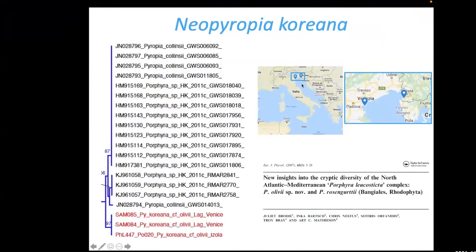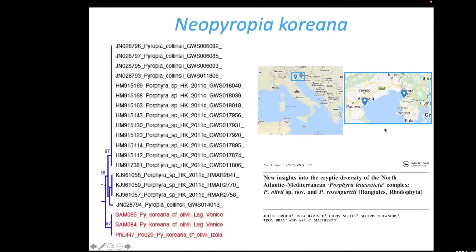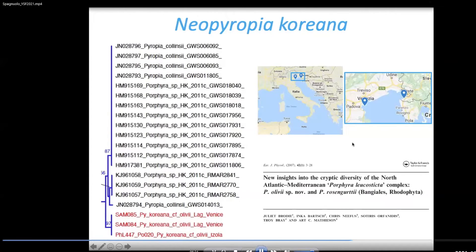Neoporphyra koreana had never previously been sequenced along the Italian coast or in the Mediterranean. The only existing Mediterranean sequence of N. koreana comes from an article by Brodie et al., which sequenced rbcL from a specimen in a very old herbarium in Trieste, Italy, dating from 1889. Our CO1-5P sequence is therefore the first for N. koreana in the Mediterranean.